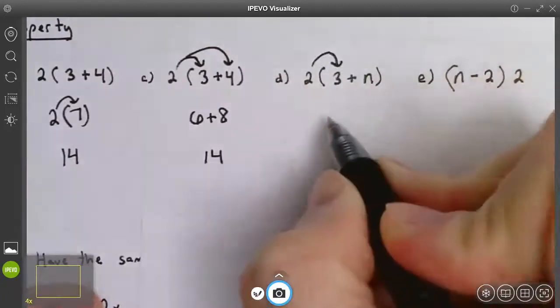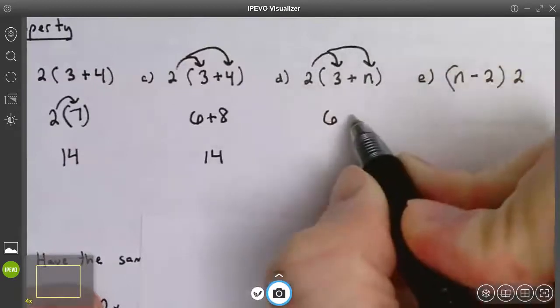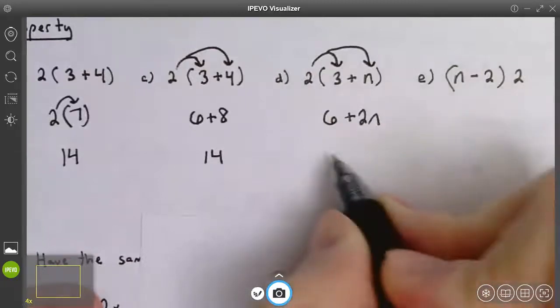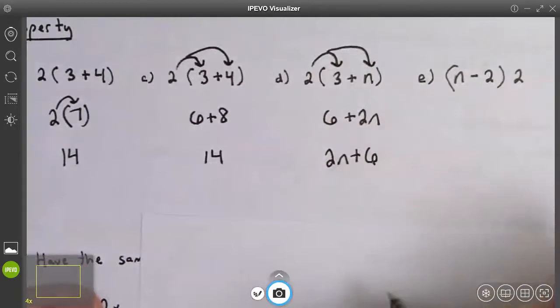2 times 3 is 6. 2 times n is positive 2n. And we always want to write it in standard form, meaning we end with a constant.